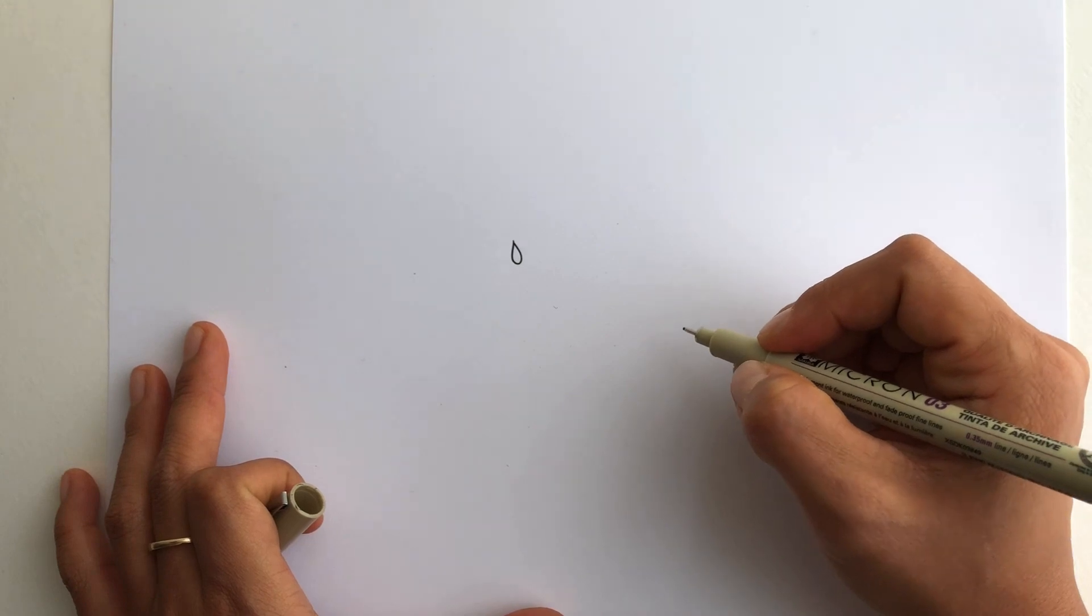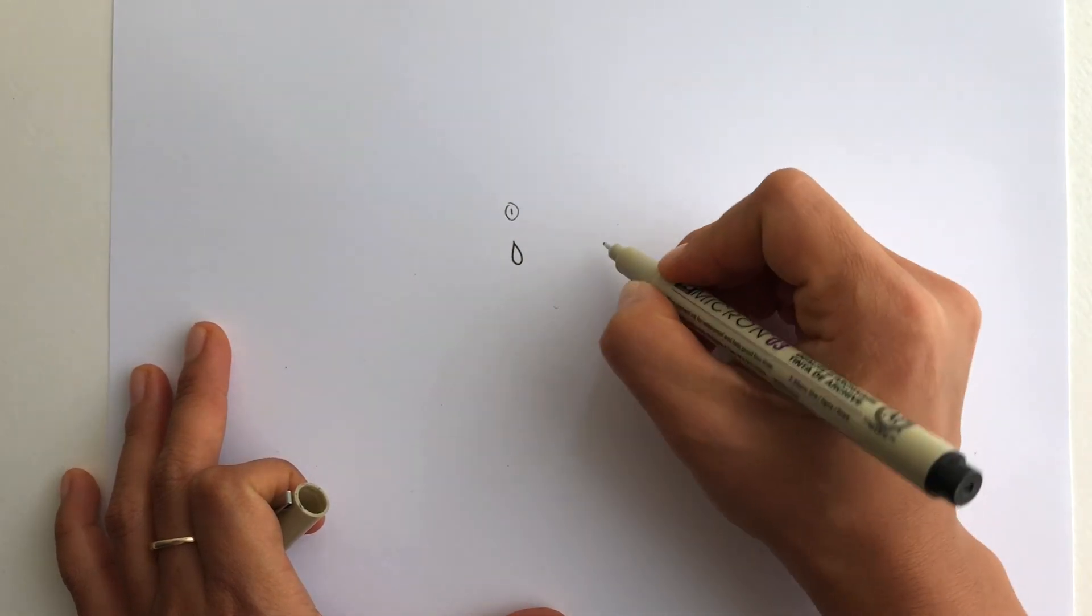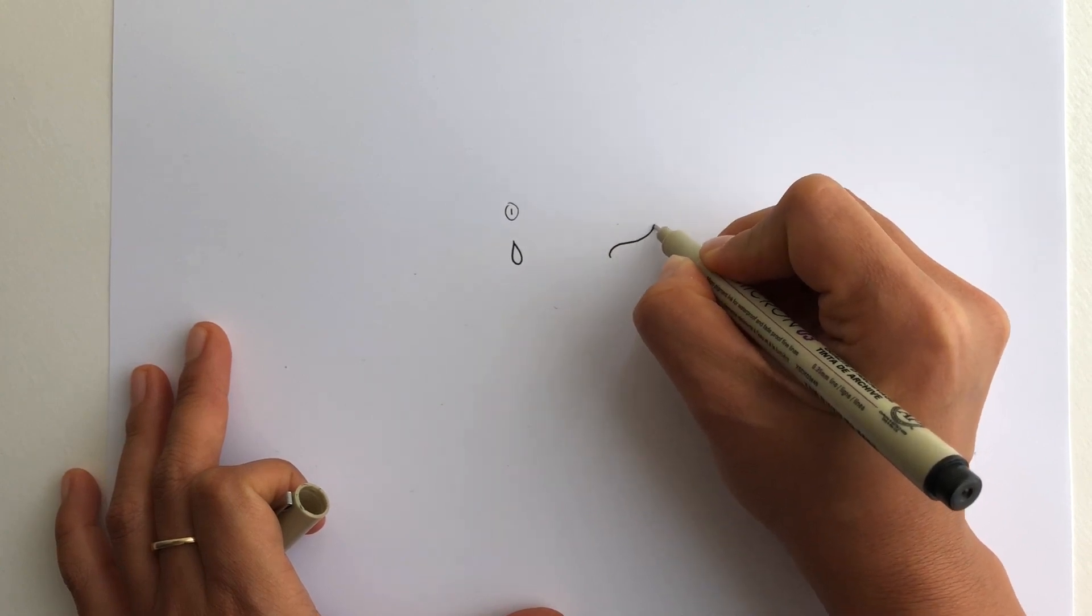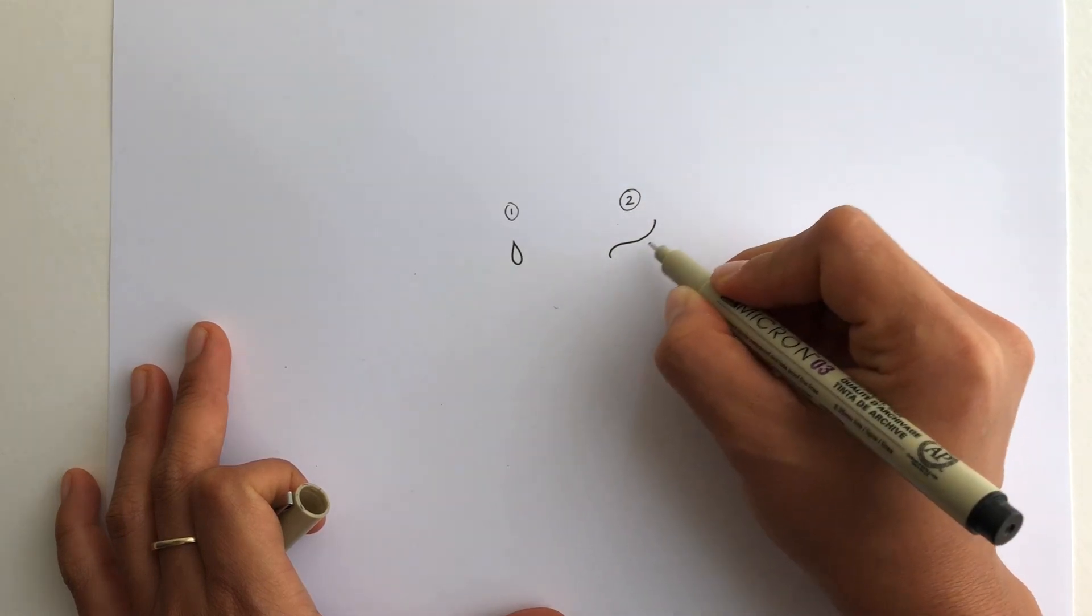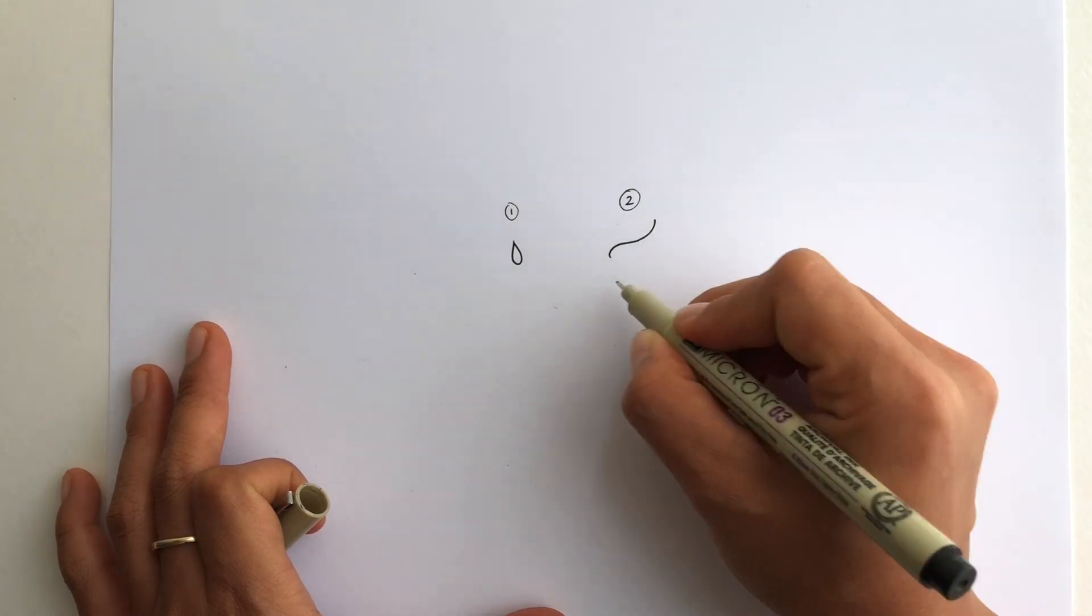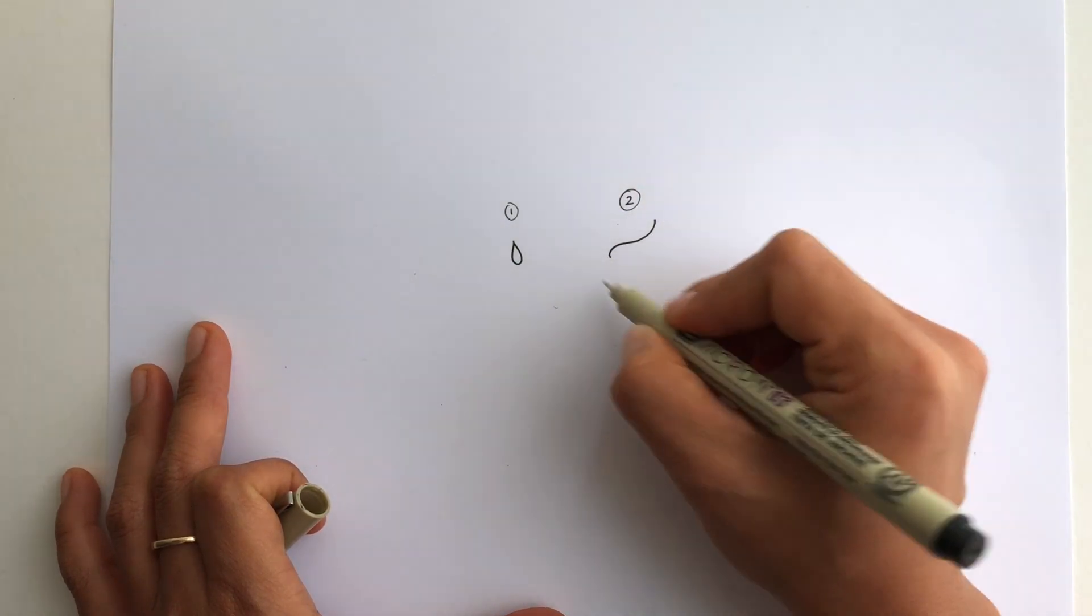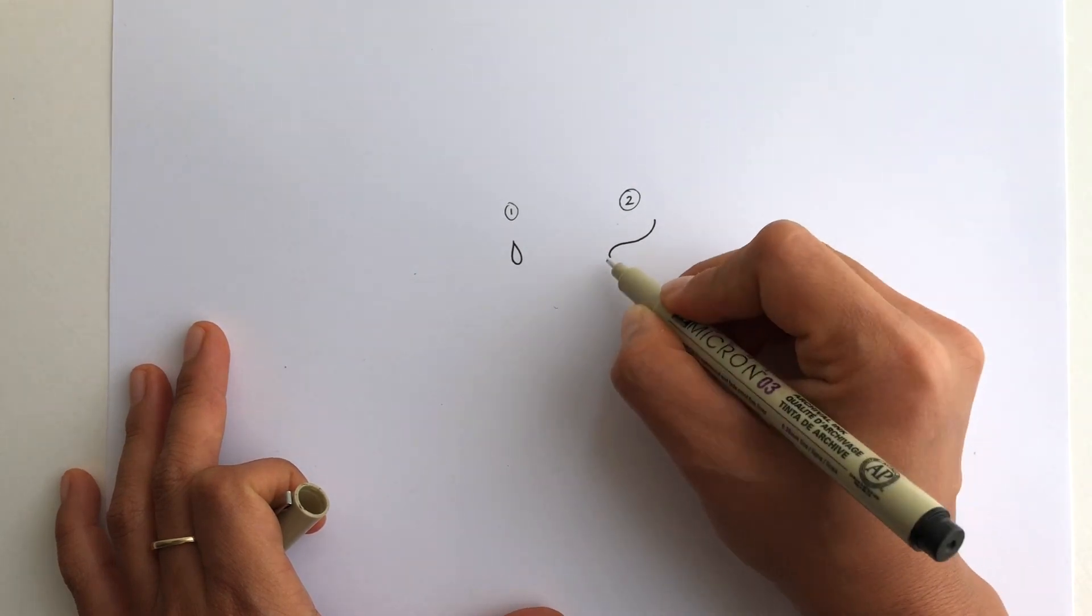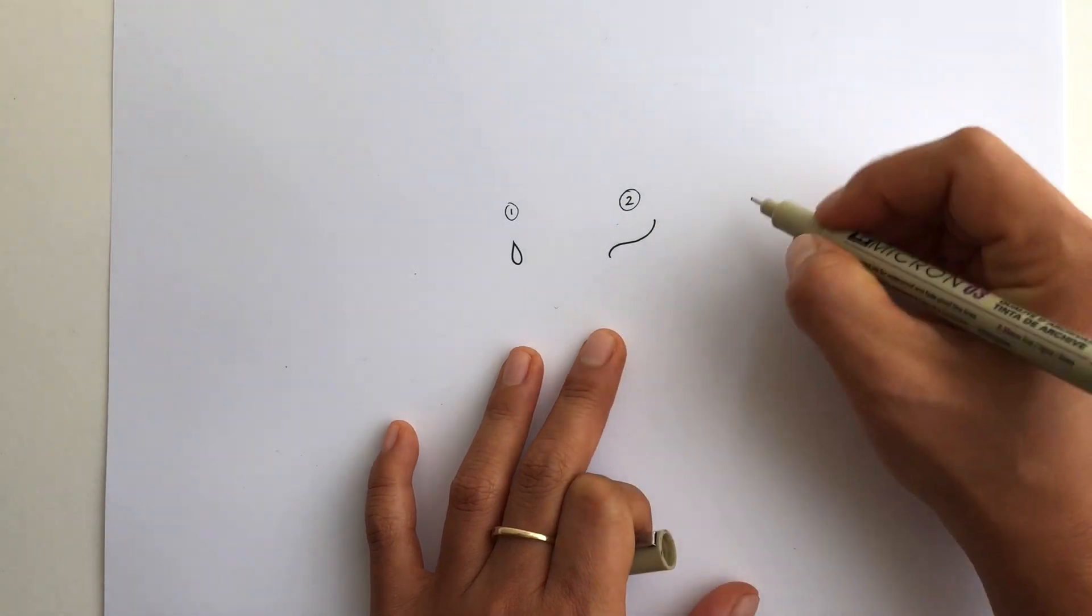An s-curve. So an s-curve is just a smoothly curving line. You can kind of see if you turned it this way it kind of looks like an S. It doesn't have to perfectly follow the curves or even the direction of an S, it's just to give you an idea of the kind of character that this line should have.